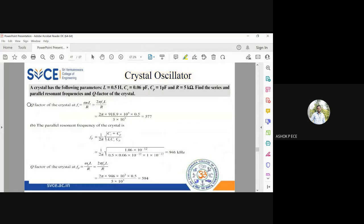And at series resonant, the quality factor is ωL by R. So higher the quality factor, the crystal is very good. It is pure. It is going to have a high degree of selectivity.